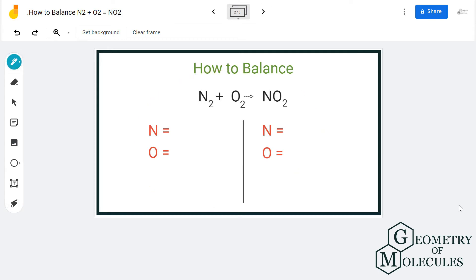So on reactant side we have two nitrogen atoms and two oxygen atoms, but when we go to the product side there is only one nitrogen atom and two oxygen atoms.